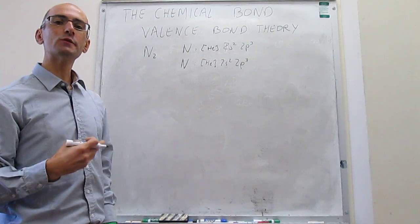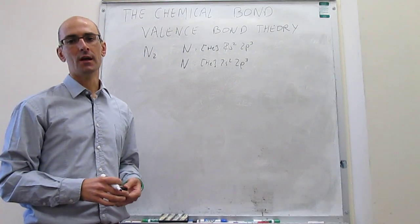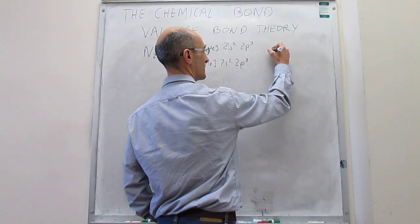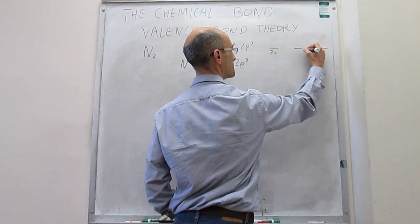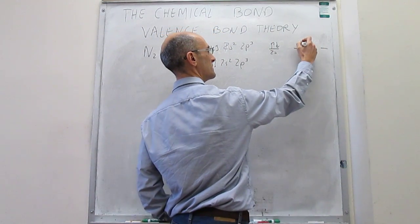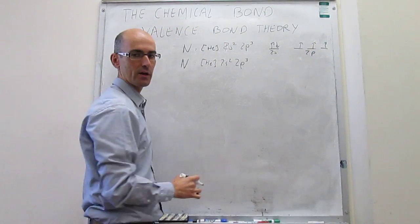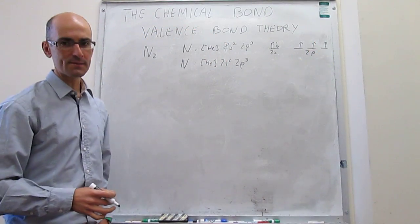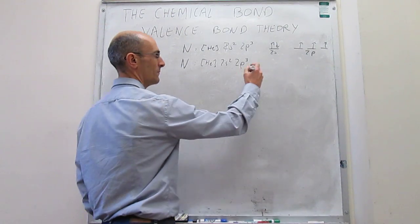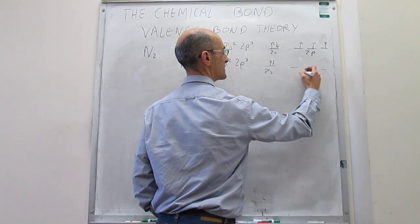To try to start to visualize how the overlaps between these atomic orbitals are going to be, we draw the box electronic configurations. That will be your 2s, and these are your 2p's, and then you have 5 electrons: 2 in the 2s, and then 1, 2, 3. Notice that according to Hund's rule, those should have parallel spins, and they should also be in different orbitals. This is now the electronic configuration for the second atom.